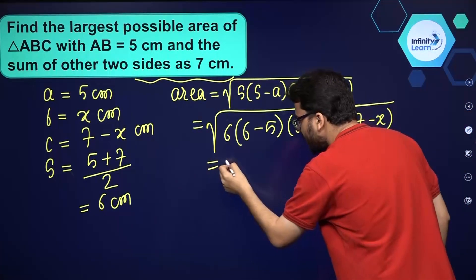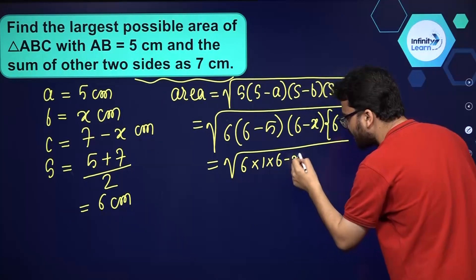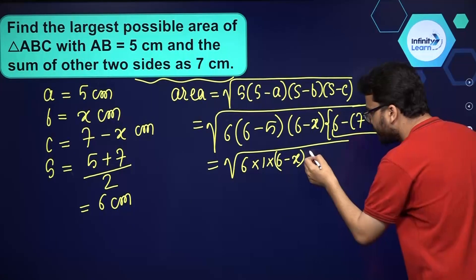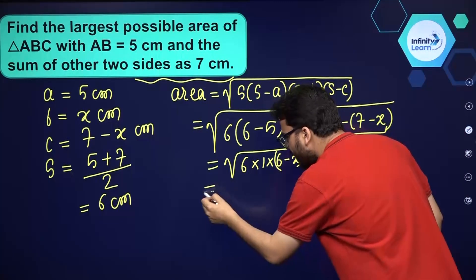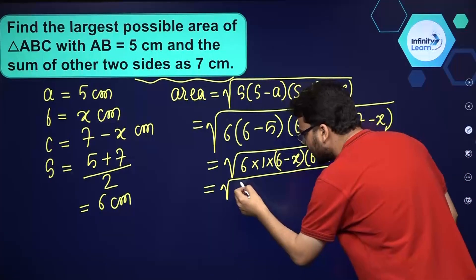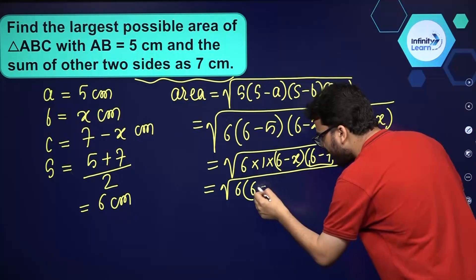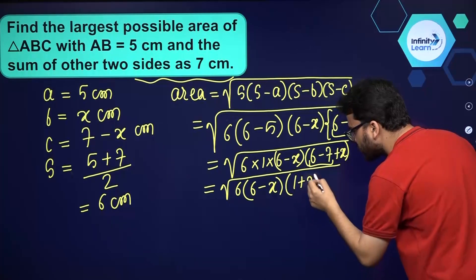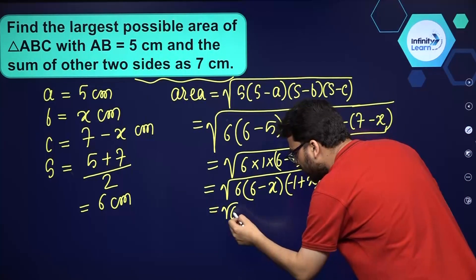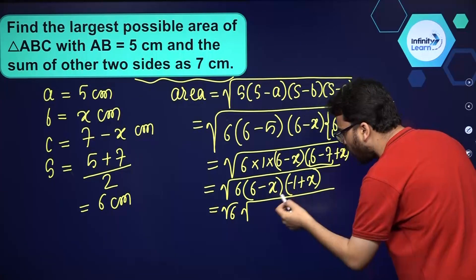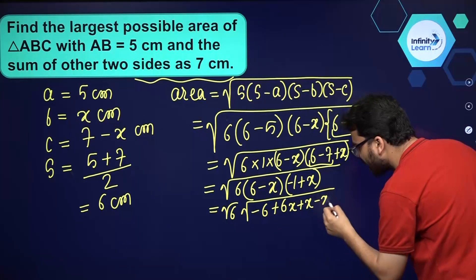Simplifying: this becomes √(6 · 1 · (6−x) · (6−7+x)). Opening up the bracket, we get 6 minus 7 plus x, which is x minus 1. So inside the square root we have 6 times 1 times (6−x) times (x−1). Expanding that product gives minus x² plus 6x plus x minus 6, which becomes minus x² plus 7x minus 6 inside the square root.